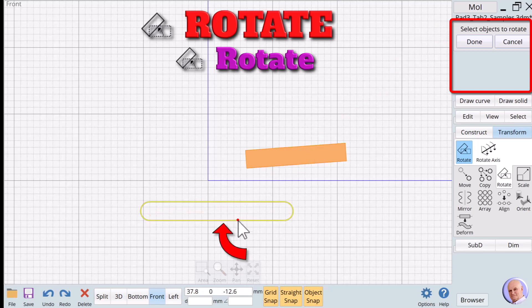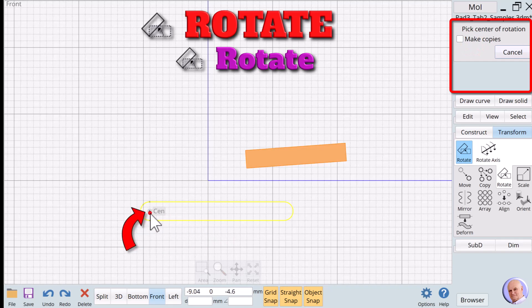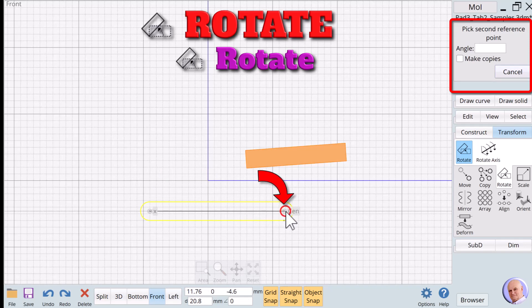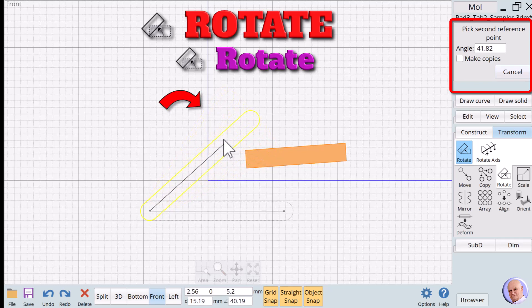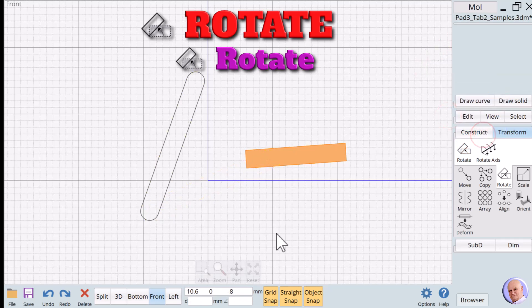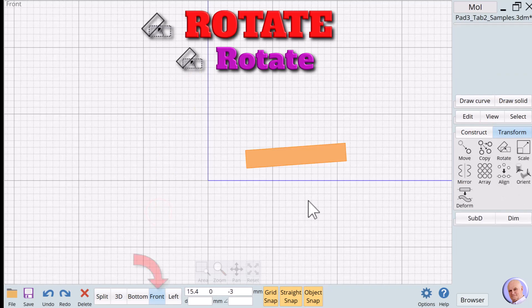We pick the object to rotate, then the center of the rotation. Next, the reference point that acts as the handle for our rotation. And finally, the new angle of rotation. We can use the mouse or enter the angle directly. We'll delete the first test object.